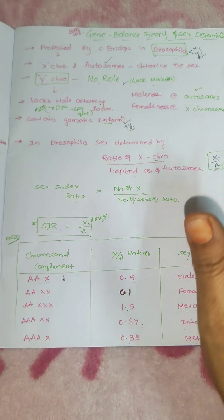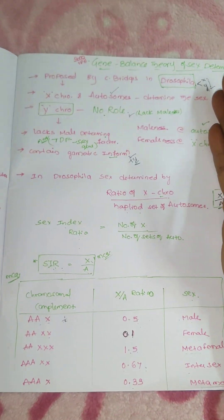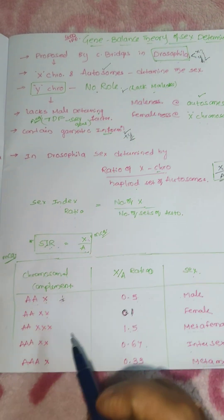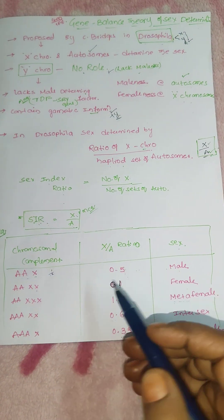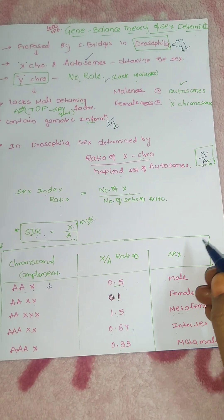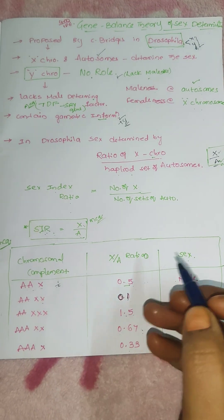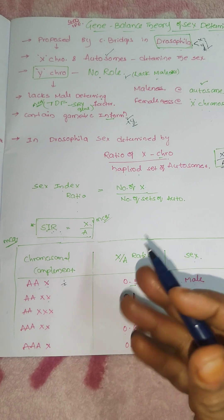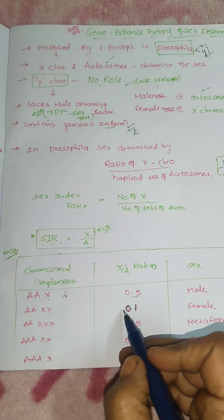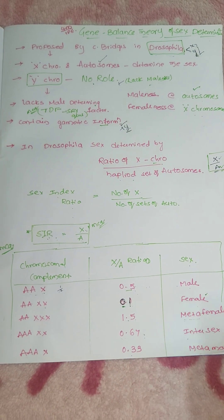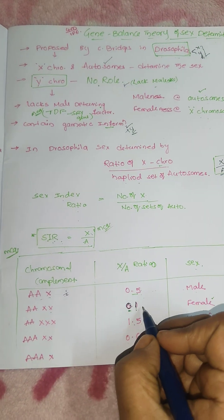And also he did experiments and he conducted the triploid organisms. So here in the MCQ they may ask the ratio is, example, 0.5. What is the sex of the offspring? And if the ratio of X and A or in the genetic balance theory, the sex index ratio is 1, then what about the sex of the offspring? So this is 1.